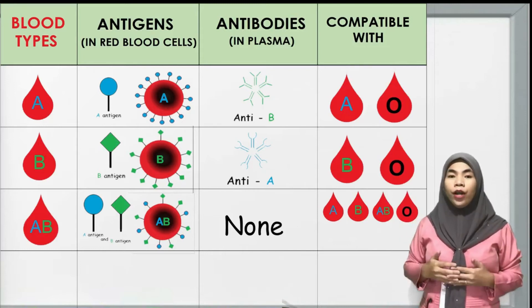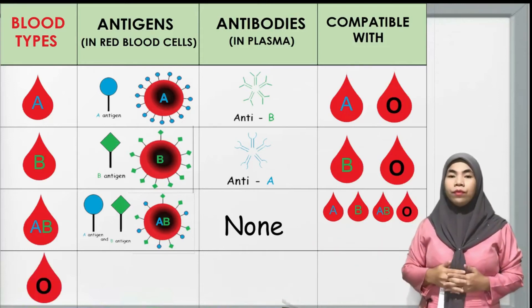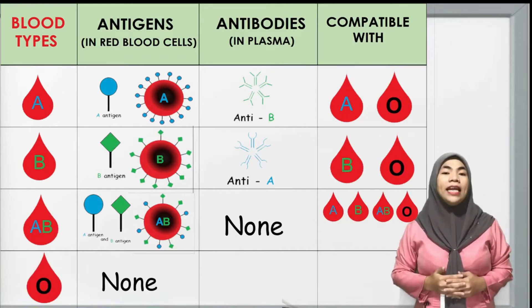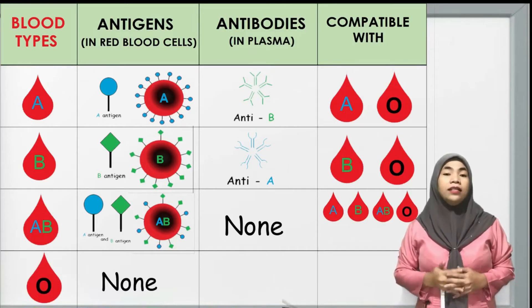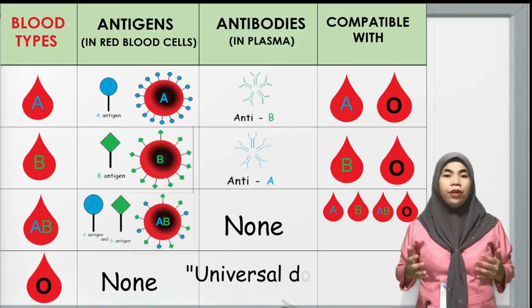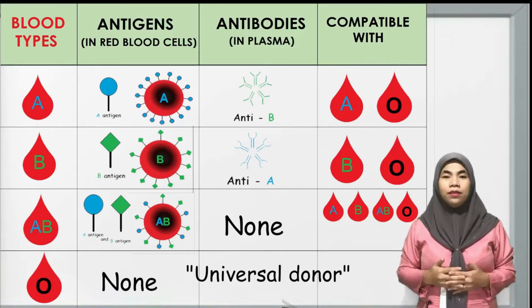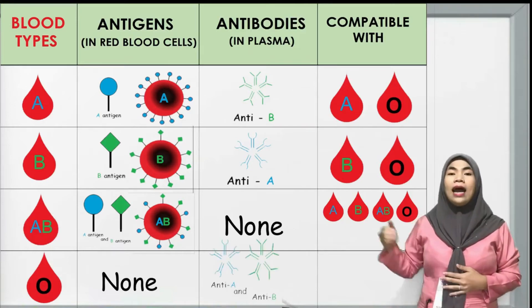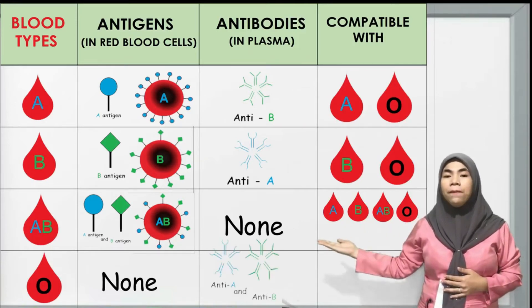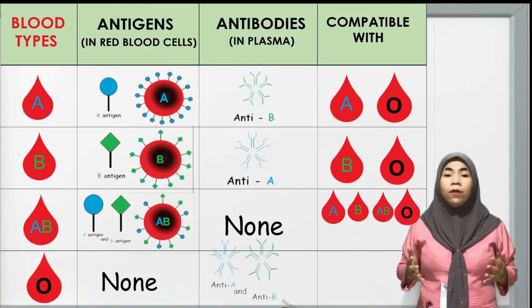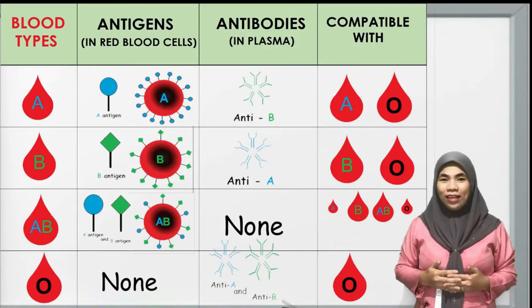Lastly, for blood type O, blood type O will not have any antigens. That is why blood type O can be donated to any other blood types. However, they will have both the anti-A and anti-B antibodies in the plasma, so they are compatible with type O only.